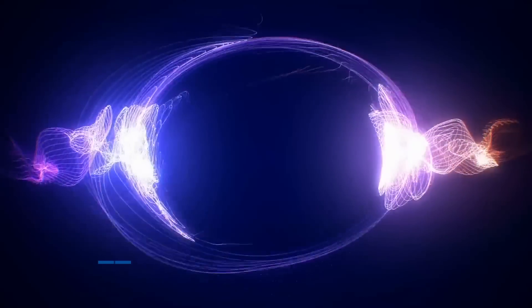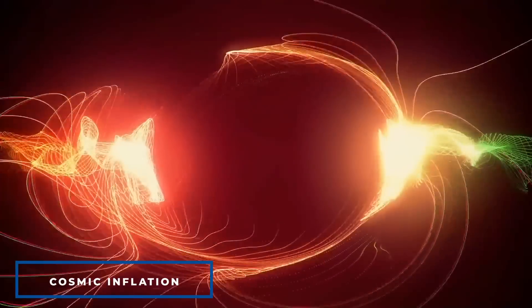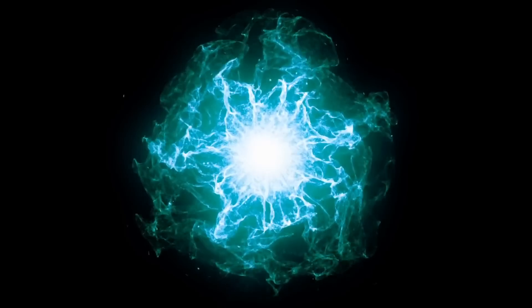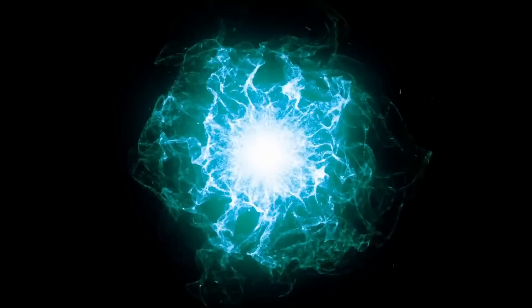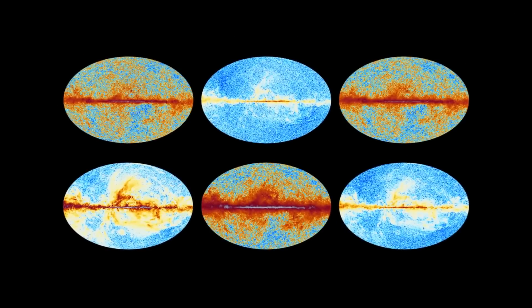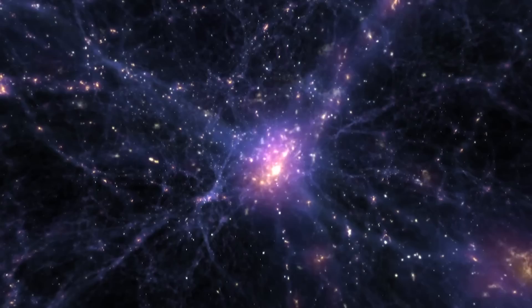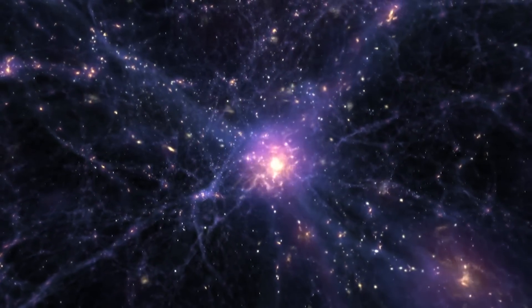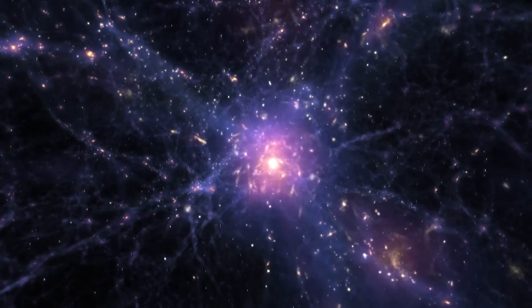Instead, observations support the idea that the hot Big Bang was preceded and set up by a period of cosmic inflation that stretched the universe's curvature to the point where it was indistinguishable from flat, and then inflated away any problematic unobserved high-energy remnants predicted to form at high temperatures. This resulted in the universe having the same energy density everywhere, with quantum fluctuations caused by inflation stacked on top of the uniform energy background.